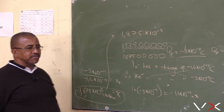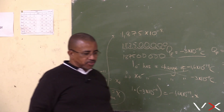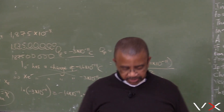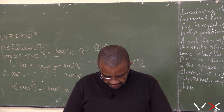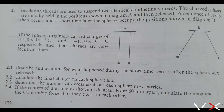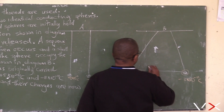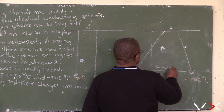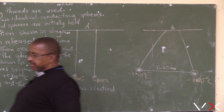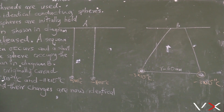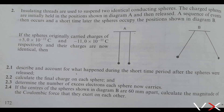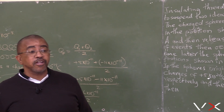So these are 1.875 times 10 to the power of 8 electrons — excess electrons. That is 187,500,000 electrons. Now part D: if the center of the sphere is shown in B, they will be 60 millimeters apart. So R is 60 millimeters. Calculate the magnitude of the coulombic force.